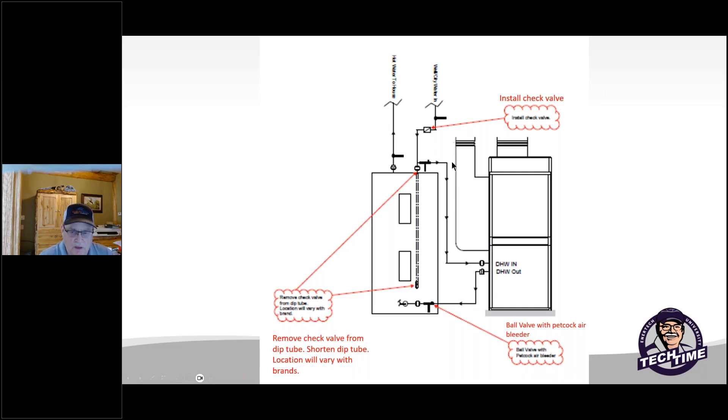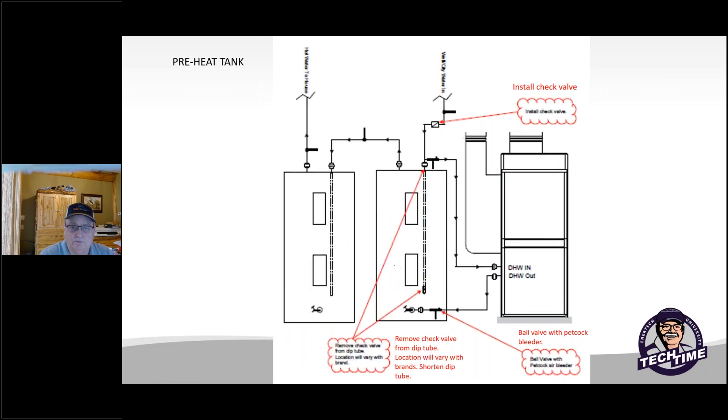Another typical way we do is with a pre-heat tank. Typically we would not have this hooked up to electricity or gas to allow the desuperheater hot water generator all the time it can to preheat the water before it goes into the second actual water heating tank. This is the best way, the most efficient way of utilizing the geothermal hot water system. Space is always considered an issue.